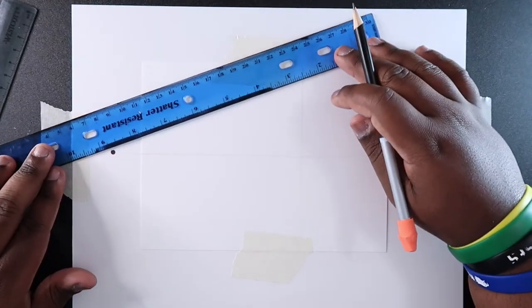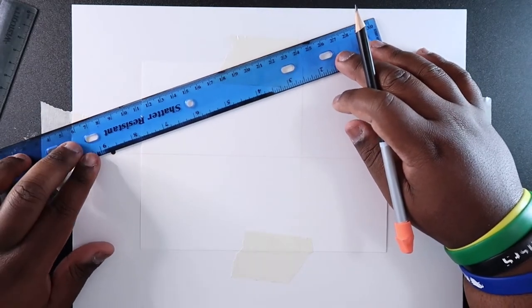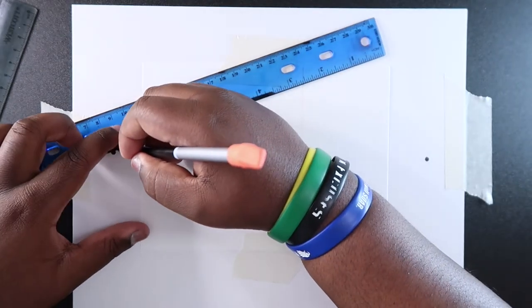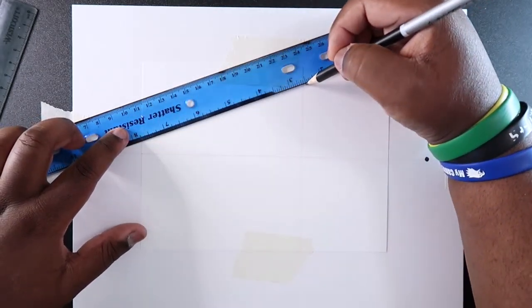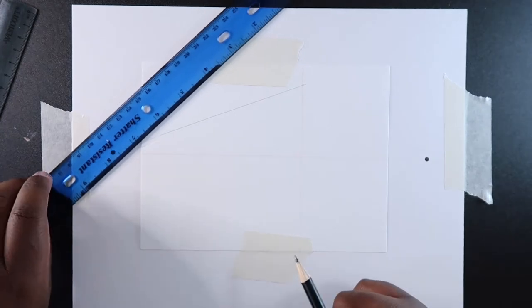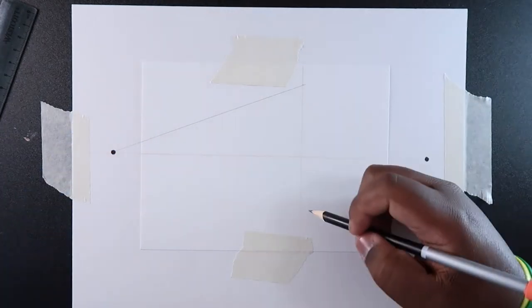All we got to do is line up the ruler and just draw a line from there. It's like connect the dots. Then do the same thing down here.